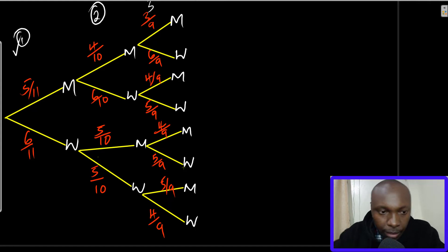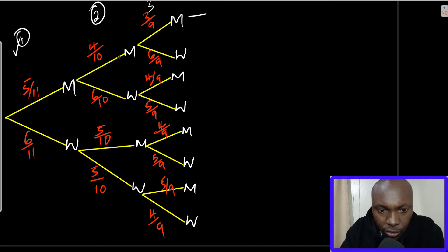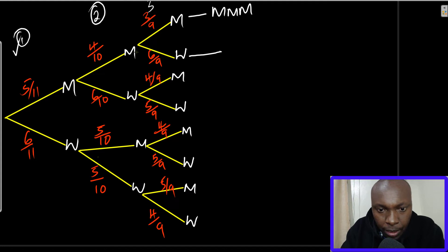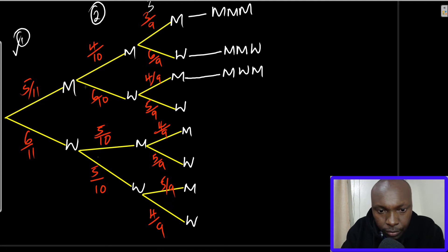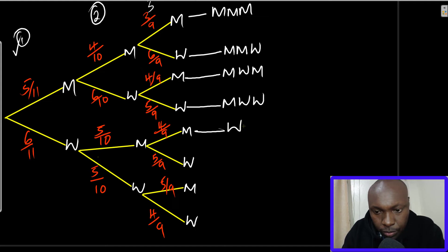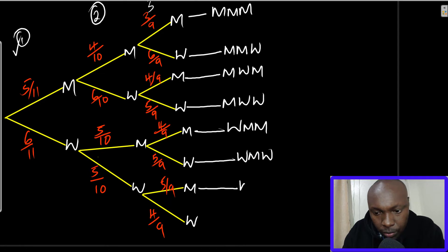Now that is how you use the tree diagram. The next thing is to list the outcomes. The first is man, man, man — probability of choosing three men. Then man, man, woman. Then man, woman, man. Then man, woman, woman. Then woman, man, man. Then woman, man, woman. Then woman, woman, man. And finally woman, woman, woman.